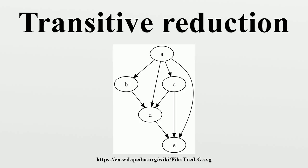Nevertheless, it is straightforward to characterize the minimal graphs with the same reachability relation as the given graph G. If G is an arbitrary directed graph and H is a graph with the minimum possible number of edges having the same reachability relation as G, then H consists of a directed cycle for each strongly connected component of G connecting together the vertices in this component, and an edge XY for each edge XY of the transitive reduction of the condensation of G, where X and Y are two strongly connected components. The condensation of G is a directed acyclic graph that has a vertex for every strongly connected component of G and an edge for every two components that are connected by an edge in G. In particular, because it is acyclic, its transitive reduction can be defined as in the previous section.